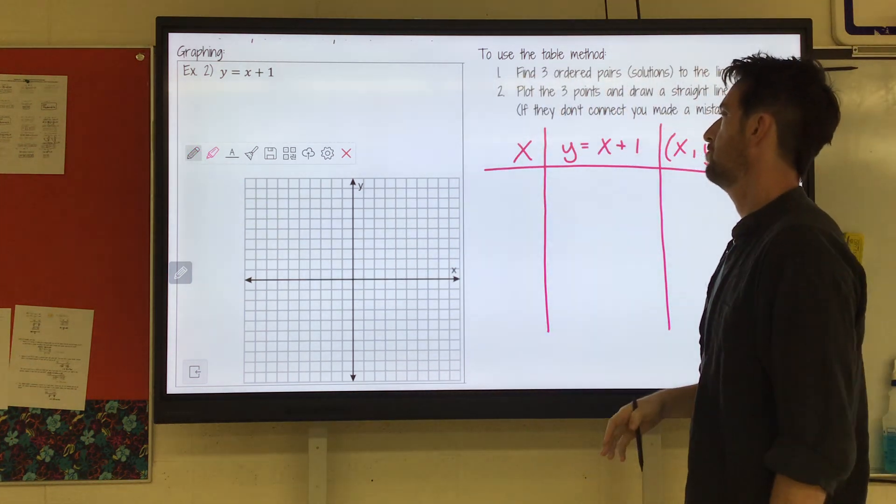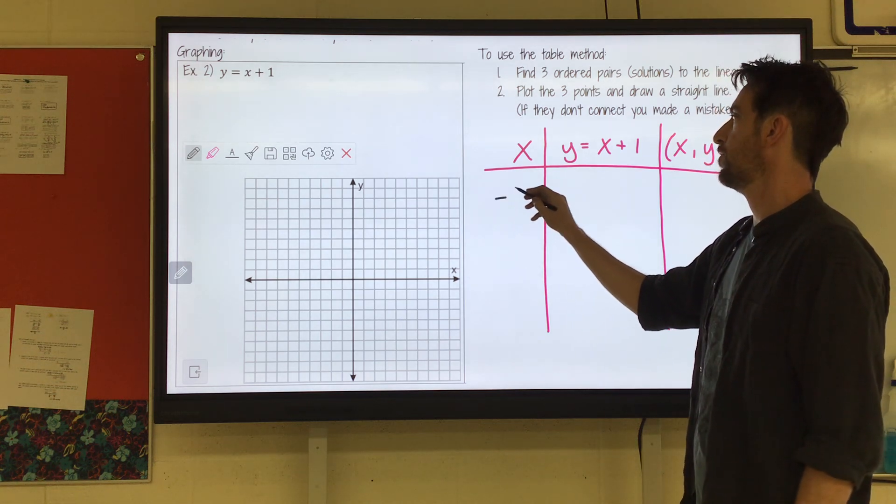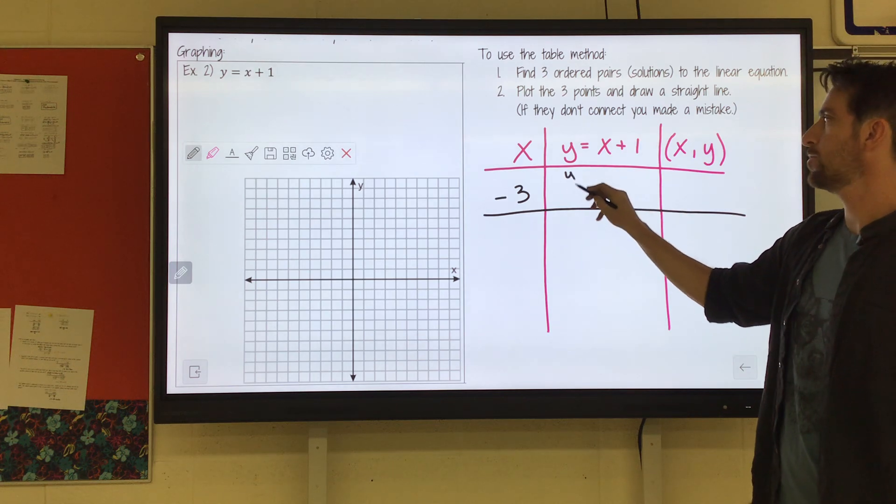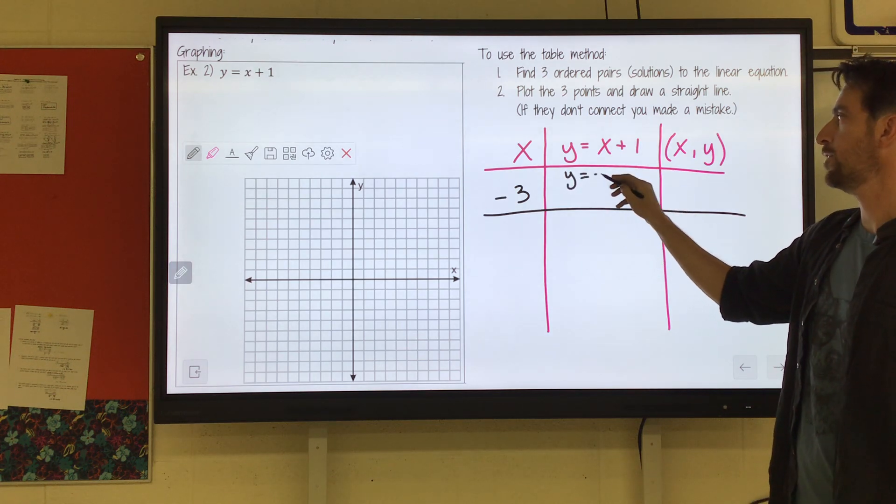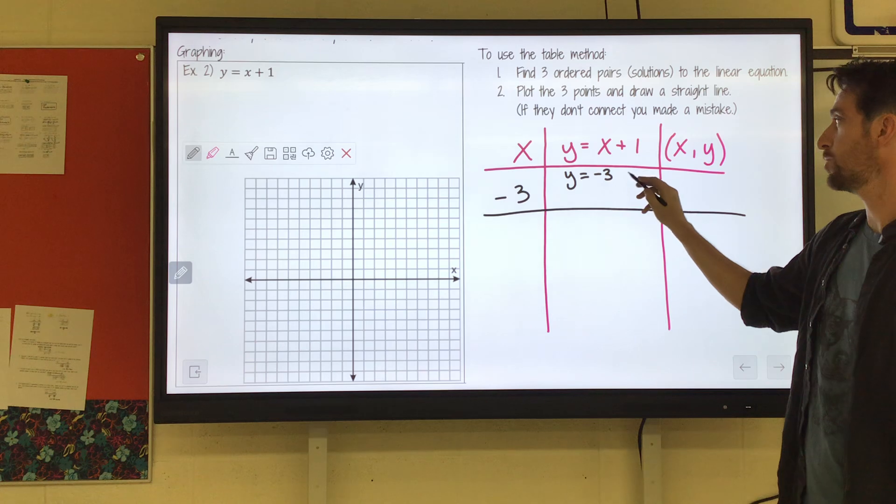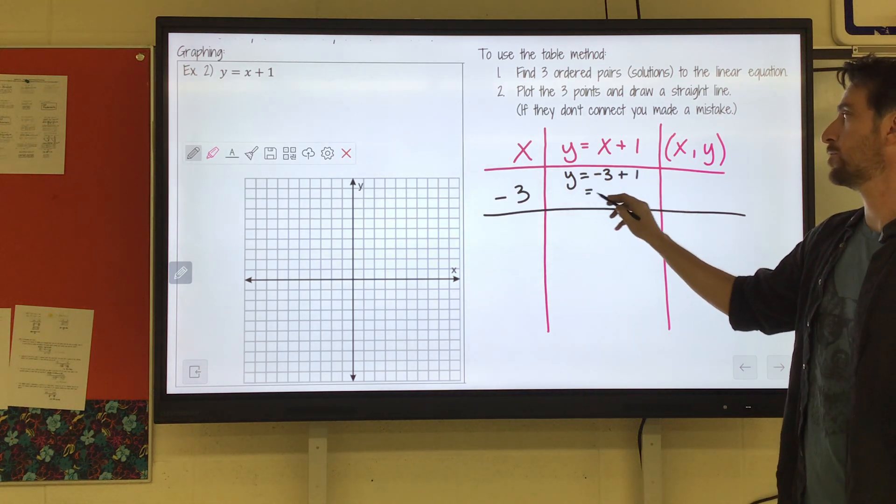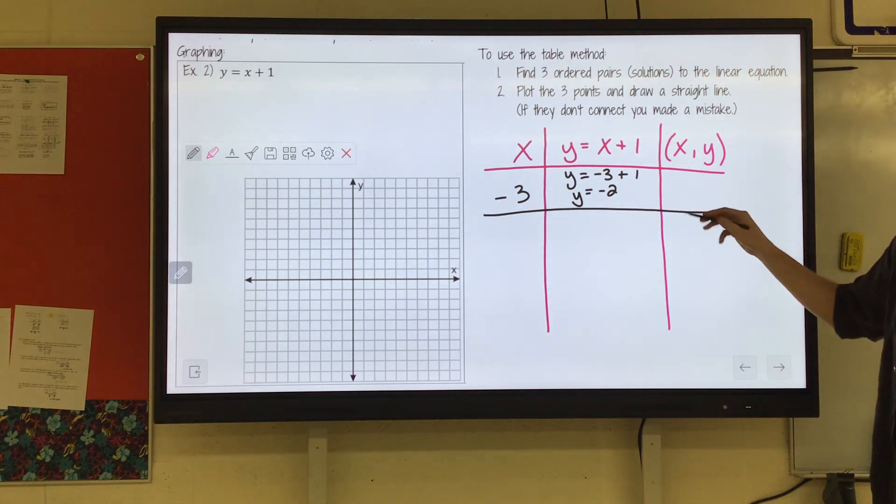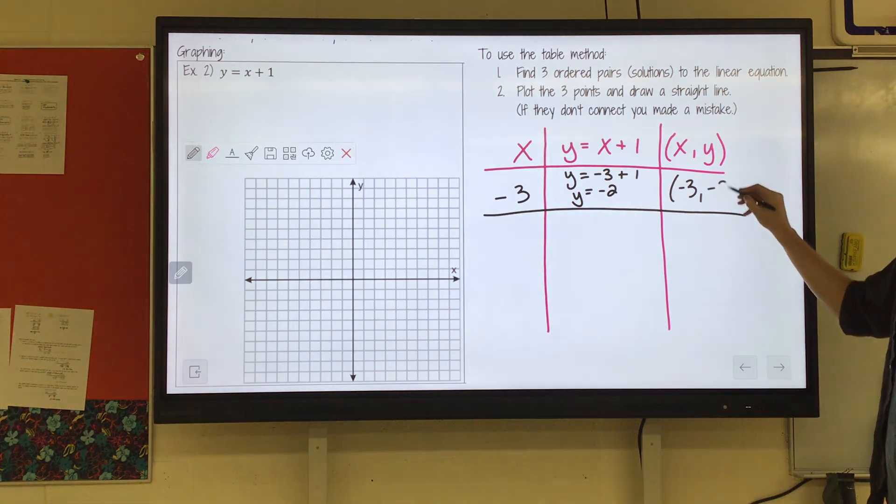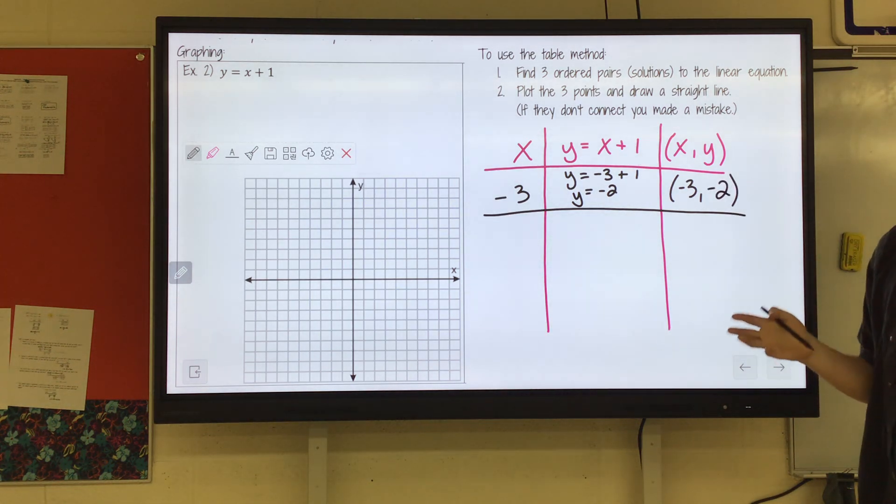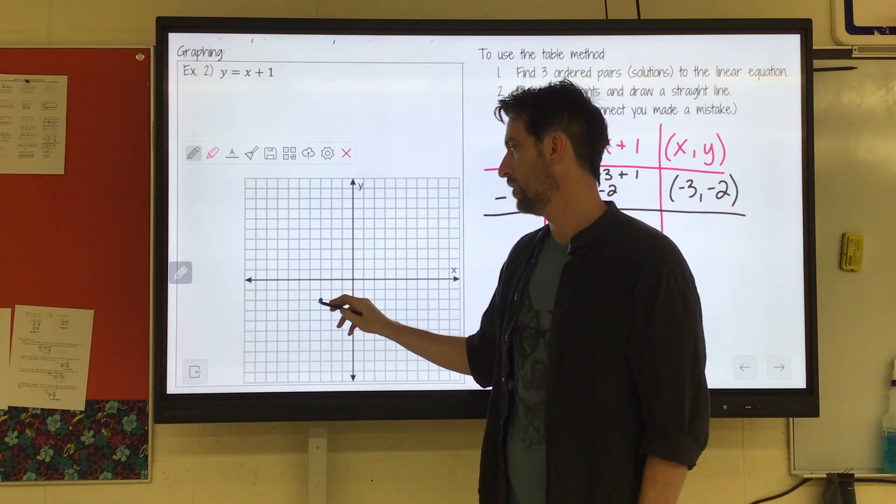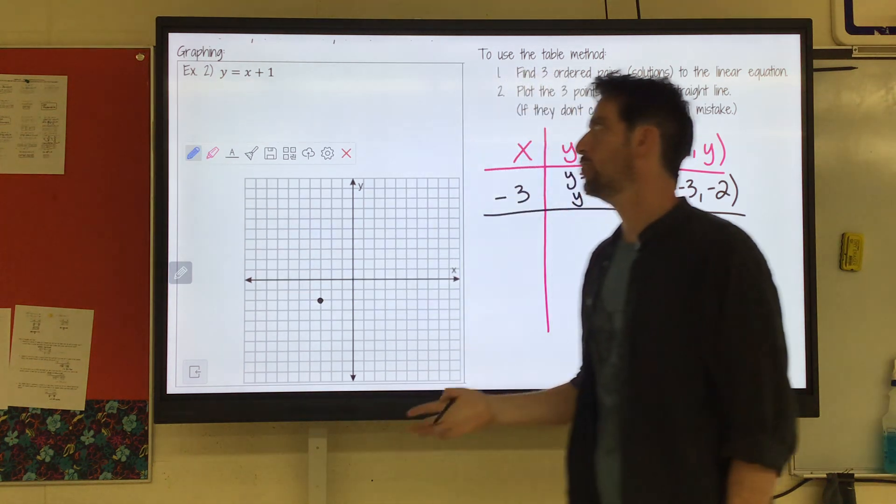So let's say I pick to put in negative 3 for x. Let's see what we get. Well, y equals x, negative 3. We just chose that, plus 1. Negative 3 plus 1 is negative 2. So when we put in negative 3 for x, the answer we got was negative 2. So that could be our coordinate. So go ahead and plot the point, negative 3, negative 2, which is 3 to the left, down 2. There's 1. We got to do that two more times.